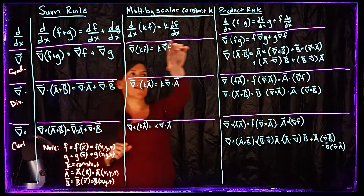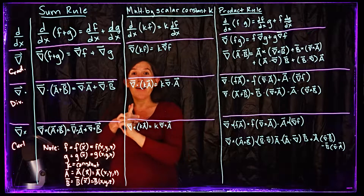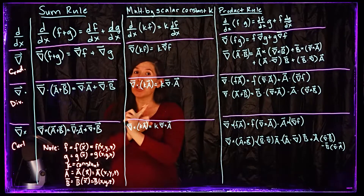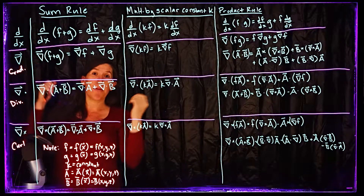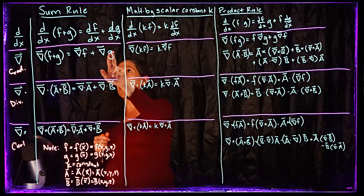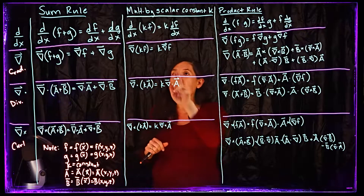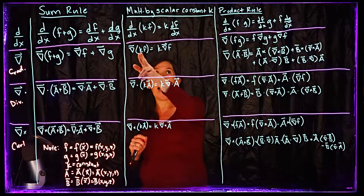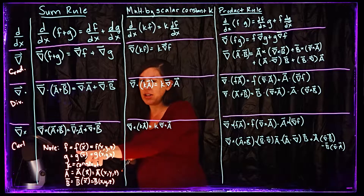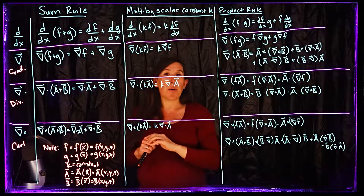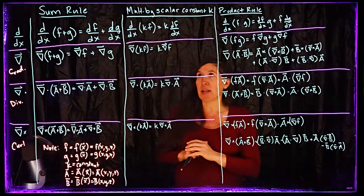Let's focus on the second row where we have the gradient. The gradient has to be taken of a scalar function, not of a vector. So we can take the gradient of a sum of scalar functions f plus g, and our sum rule looks very similar to our standard derivative sum rule — so this one should be pretty easy to remember. Similarly, if we take the gradient of a constant k times f, the k gets pulled out, just like in single variable calculus.